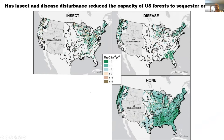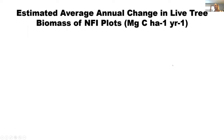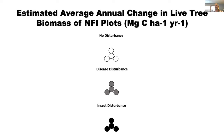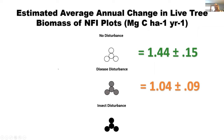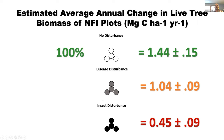Yes, insect and disease disturbance has reduced US forest carbon sequestration capacity. But does the magnitude really matter? Plots with no disturbance sequestered about 1.44 megagrams carbon per hectare per year. Disease-disturbed plots averaged about 1.04, and insect-disturbed plots about 0.45. If we consider undisturbed plots at 100% capacity, disease-disturbed plots were at about 72% capacity and insect-disturbed plots at only about 31% of that capacity.